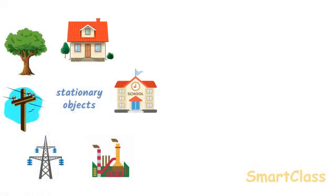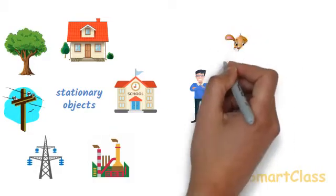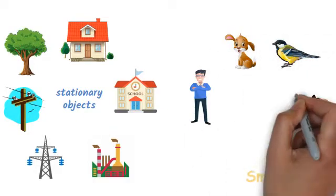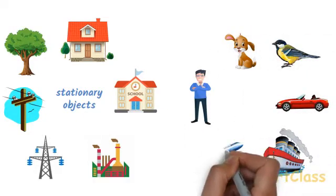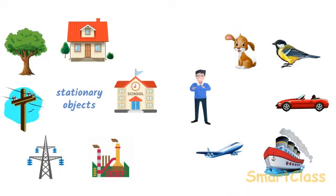which are stationary objects and these objects remain at a fixed place. Whereas on the other hand a man, animals, birds, car, ship and aeroplane etc. do not remain stationary all the time and they can move from one place to another.